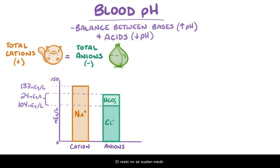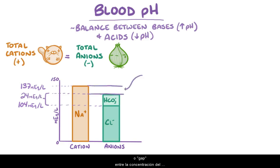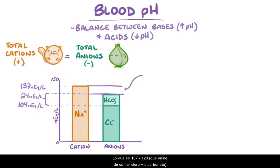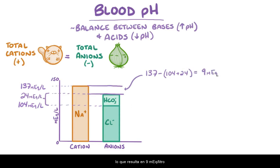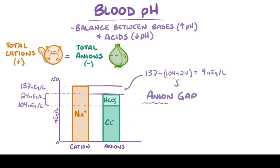The rest are unmeasured. So, just counting up these three ions, there is usually a difference, or gap, between the sodium concentration and the sum of the bicarbonate and chloride concentrations in the plasma, which is 137 minus 128 — which comes from adding chloride and bicarbonate — and so you end up with 9 milliequivalents per liter. This is known as the anion gap, and normally it ranges between 3 and 11 milliequivalents per liter.